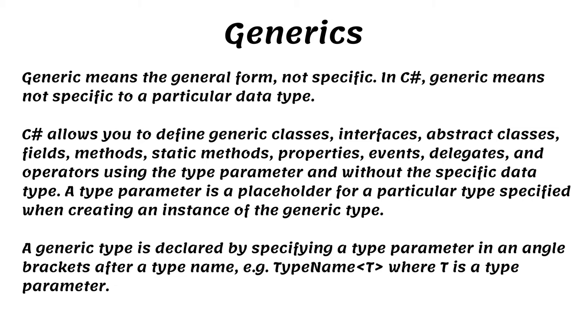A type parameter is a placeholder for a particular type specified when creating an instance of the generic type. A generic type is declared by specifying a type parameter in angle brackets after a type name, for example type name T where T is a type parameter.